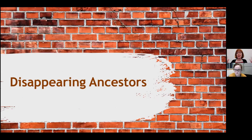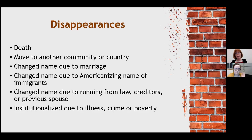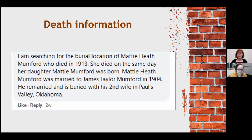Now we have disappearing ancestors. Disappearing ancestors could be due to many different reasons: death, moving, changing name due to marriage, Americanizing an immigrant name, changing name to run from the law, or being institutionalized due to illness, crime, or poverty. We have a number of brick walls submitted to us that were disappearances.